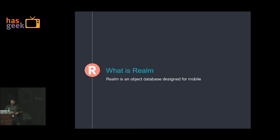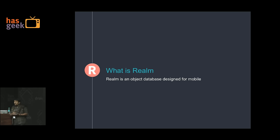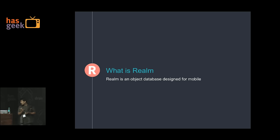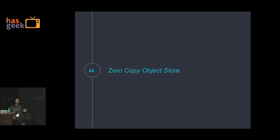So what is Realm? Realm is a mobile database designed from the ground up to replace SQLite and Core Data on iOS. It is an object data store. Realm is based on a single principle: zero copy object store. Let us see both things one by one.